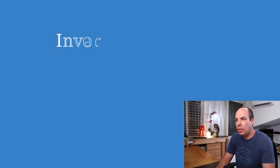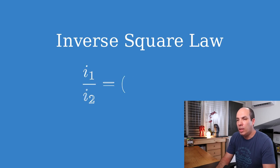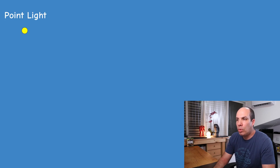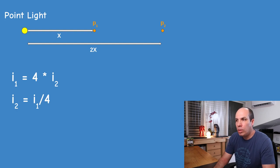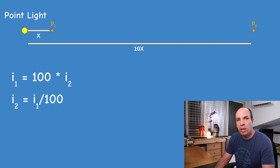In mathematical terms, the ratio between the light intensity at two different points equals the square of the inverse ratio of their distance from the light source. For example, if we have two points at a distance of x and 2x respectively, then the intensity i1 at point 1 will be equal to 4 times the intensity at point 2. In other words, the intensity at point 2, which is twice the distance of point 1, will be a quarter of the intensity at point 1. If the distances are x and 10x, then the intensity at the distant point will be 1 hundredth the intensity at the closer point.